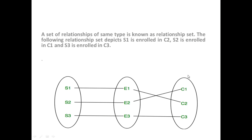There is an entity type c1, c2, and c3. S1 is related to c2, s2 is related to c1, and s3 is related to c3.